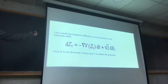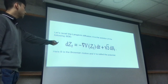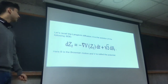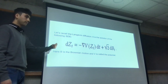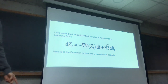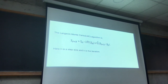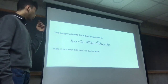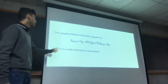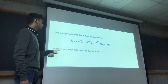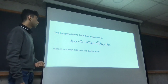Here is a reminder of the Langevin diffusion, which is the solution to this stochastic differential equation. This is called the potential, and this is a Brownian motion. And this is the Langevin Monte Carlo algorithm, for short LMC. Here, h is a step size and k is the iteration.